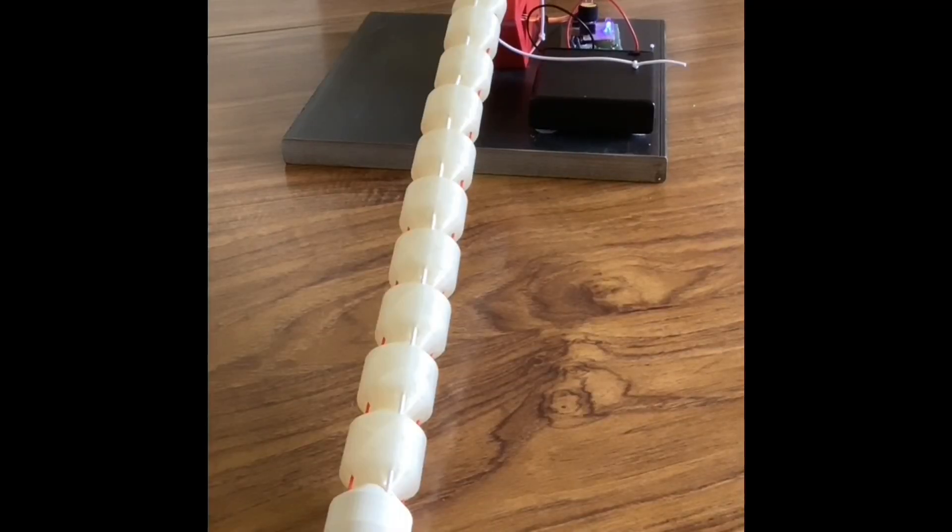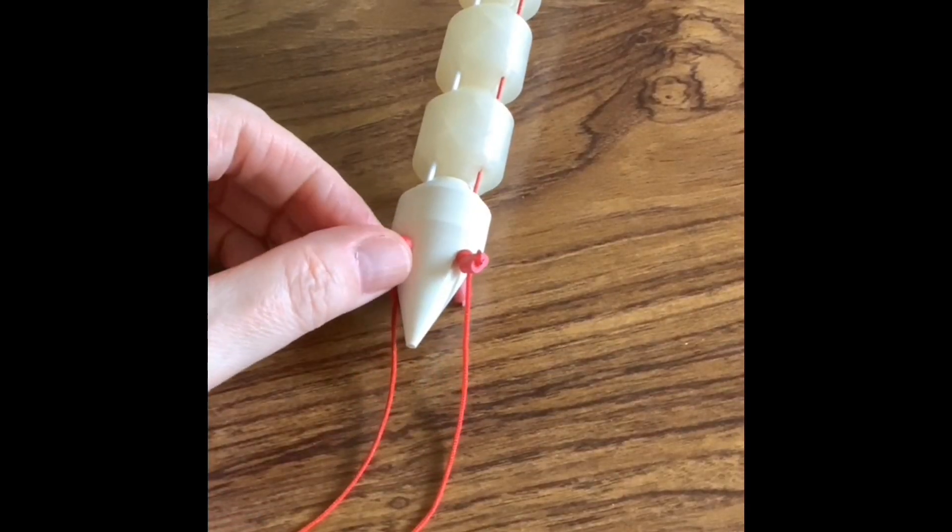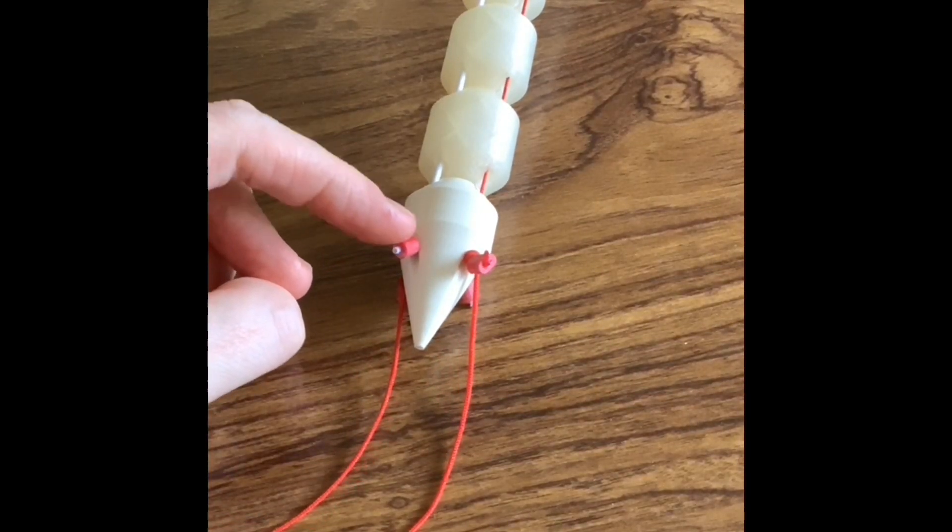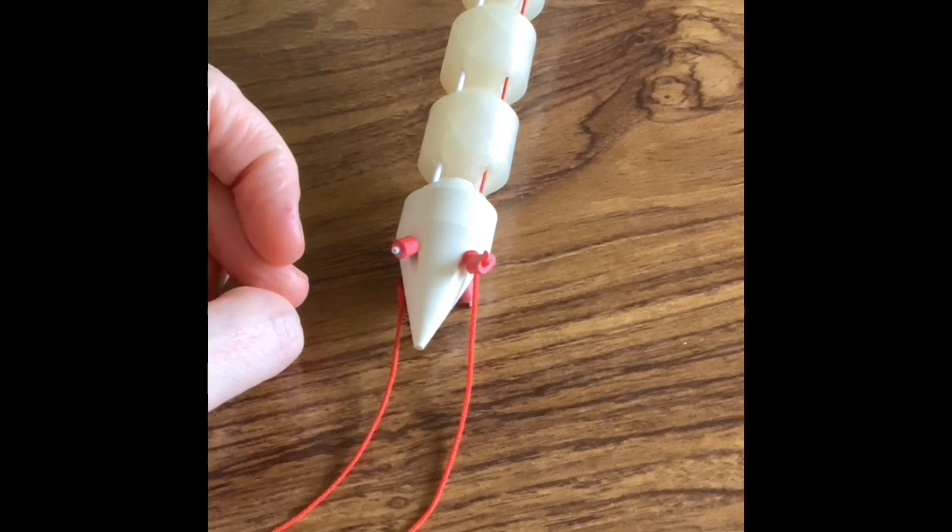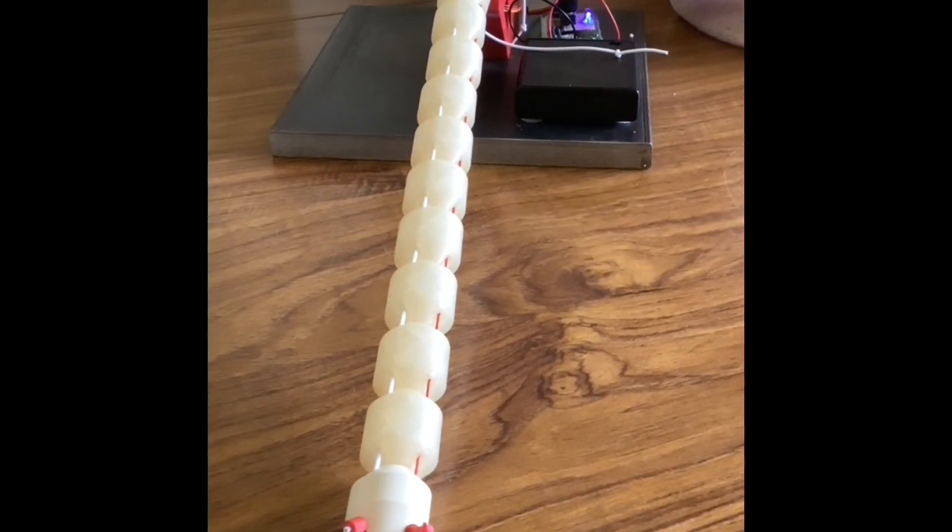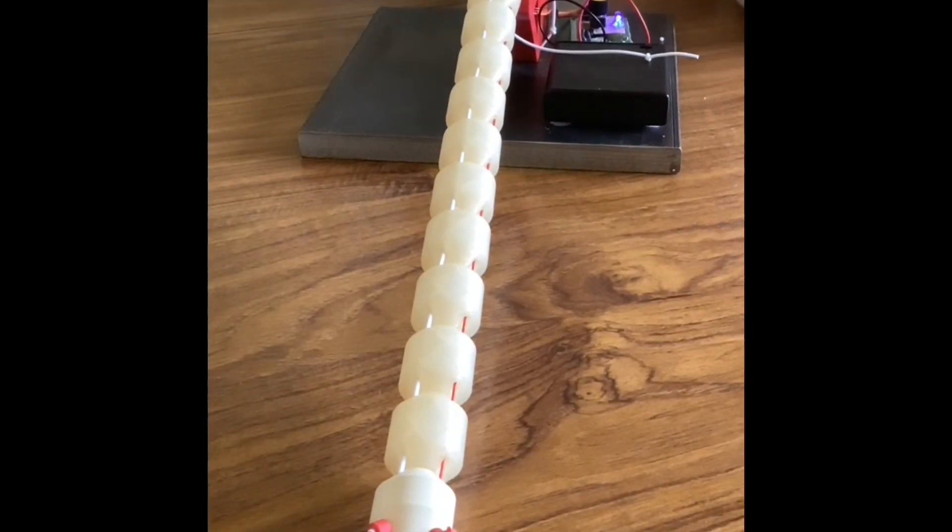Paul, you've got it all threaded up. Yeah. And you've put these little 3D printed parts on. Yeah, they're just like thick washers that you can crimp on and super glue, so it helps you adjust the tension and then lock it in place. So you're ready to switch it on and we'll see it in action. Okay.